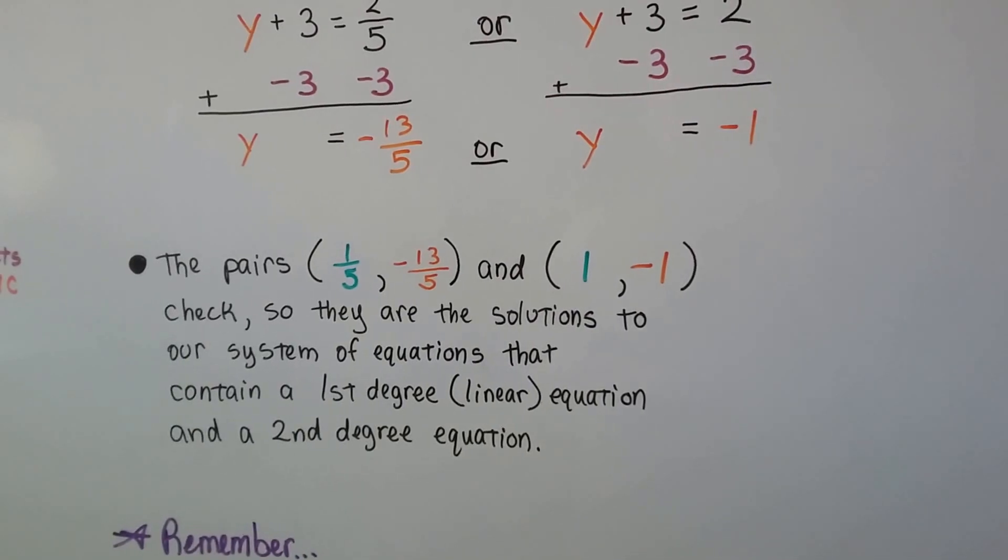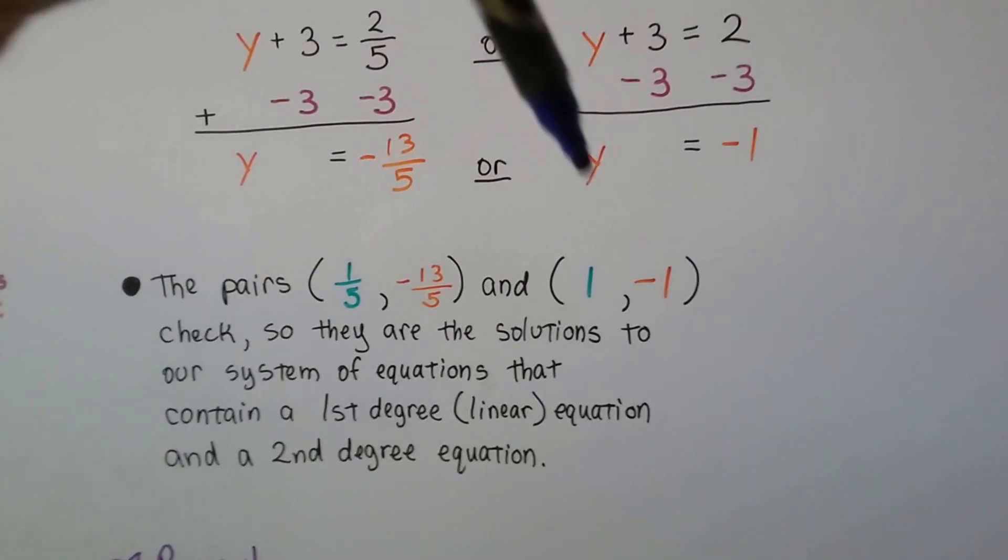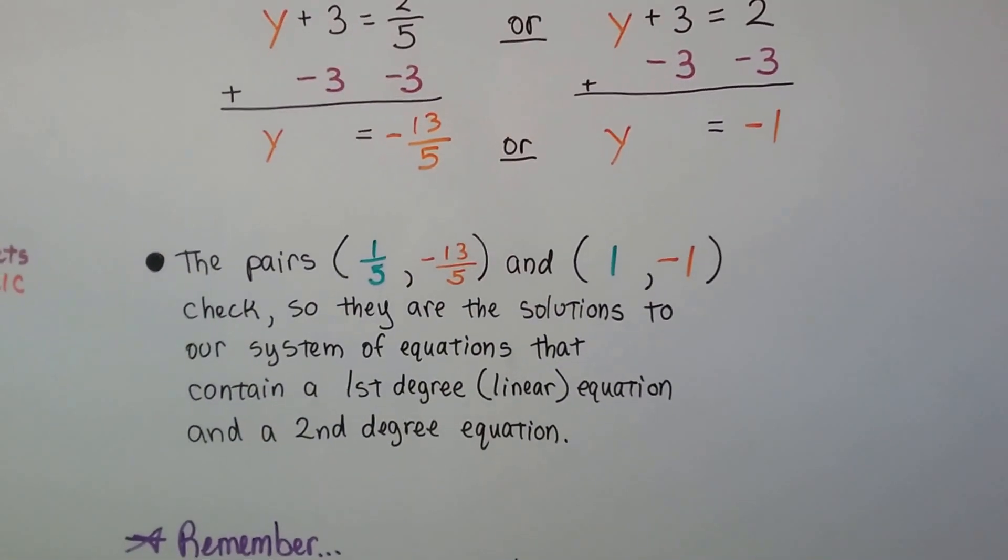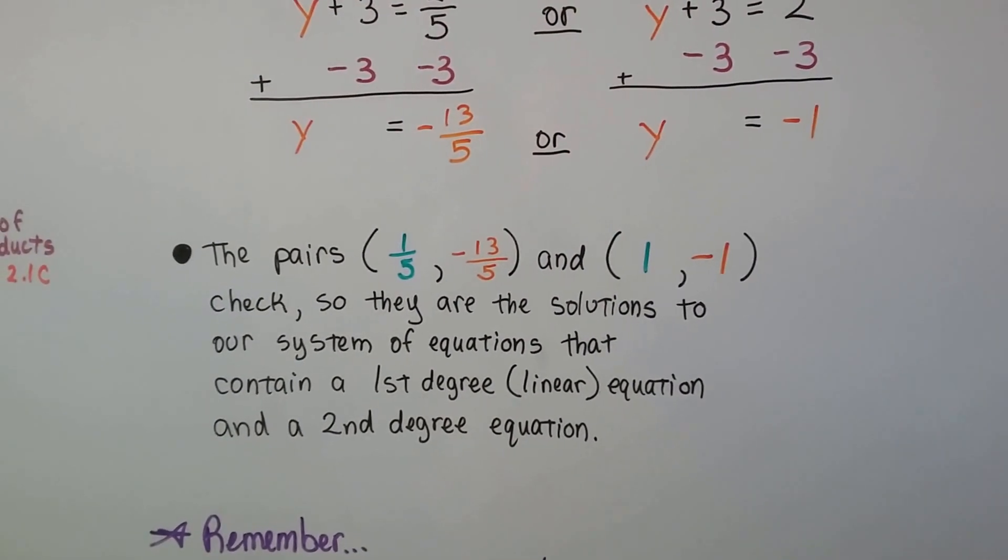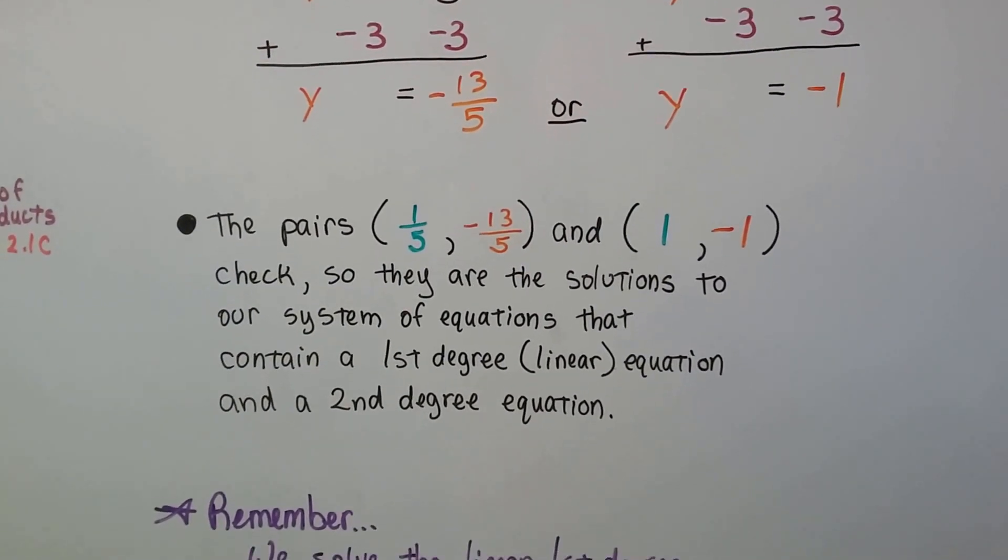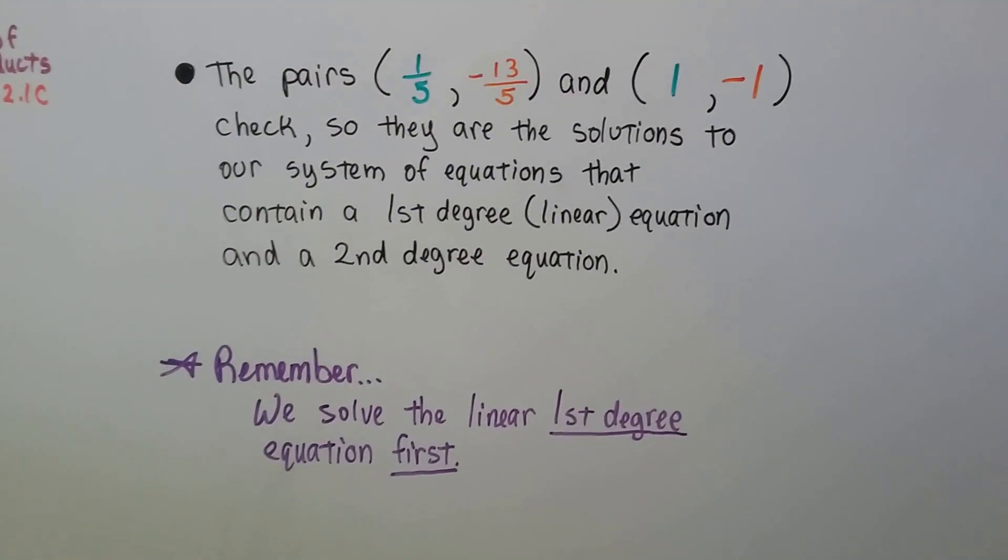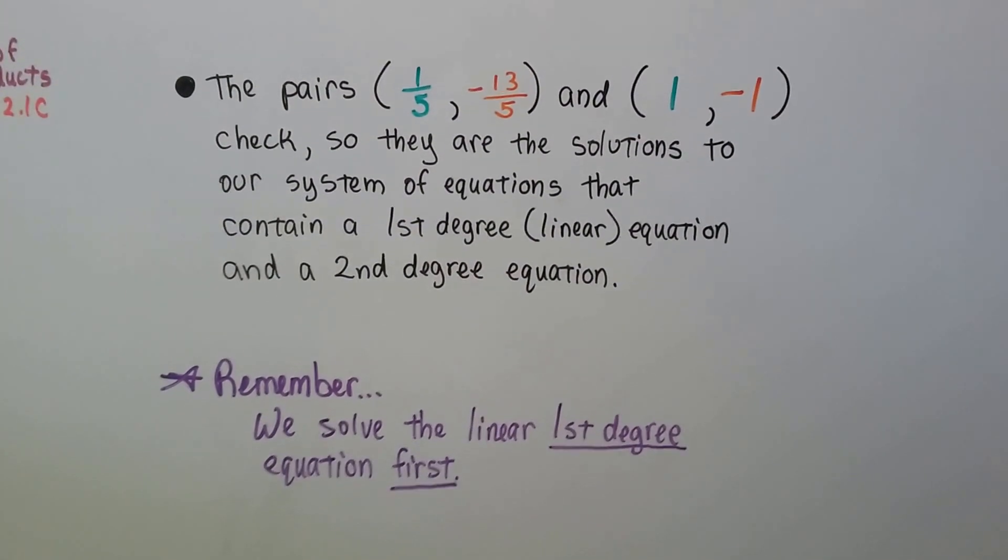We add a negative 3 to each side, and we get y = -1. So the pairs are (1/5, -13/5) and (1, -1), check. These are solutions to our system of equations that contain a first degree, that linear equation, and a second degree equation. Just remember, we solved that linear first degree equation first.